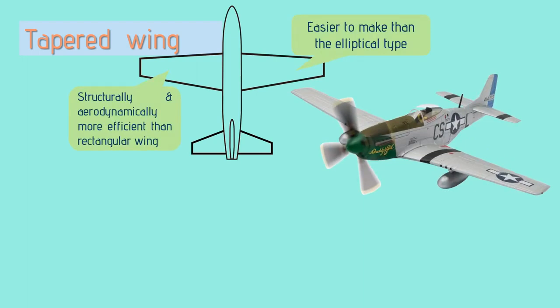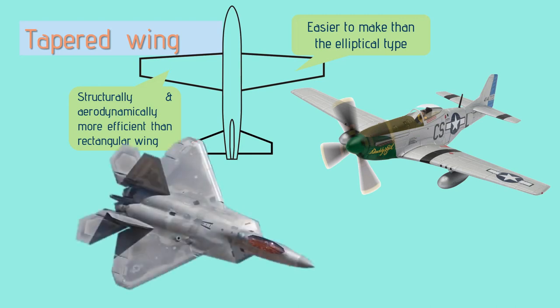Under this, swept tapered wing provides an outstanding performance at high-speed flight. The trailing edge of the wing swept forward and the leading edge swept backward. The most well-known combat aircraft is the Lockheed Martin F-22A Raptor.